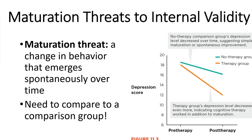Let's start with the maturation threat. A maturation threat is a change in behavior that happens spontaneously over time — some behavioral change that's altering your measurements and isn't related to your experiment. For example, children become better at solving addition and subtraction questions as they get older. If you're giving math tests to see if they improve in a particular classroom setting, you have to account for the fact that they're going to improve over time anyway just because of brain development. Similarly, children grow taller with age, so a change in time automatically gives you a change in height regardless of your experiment.